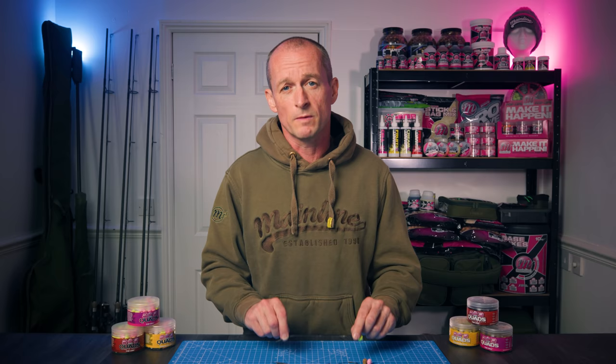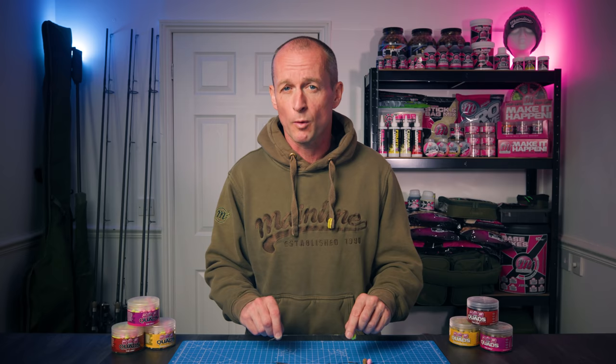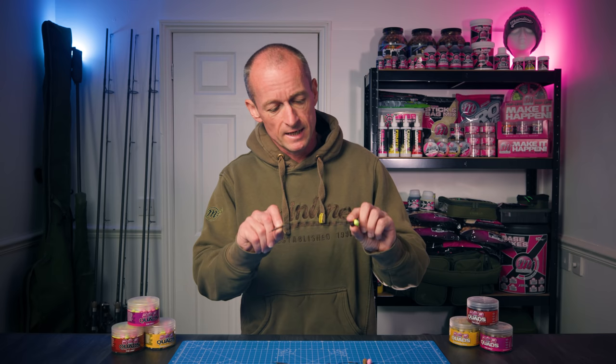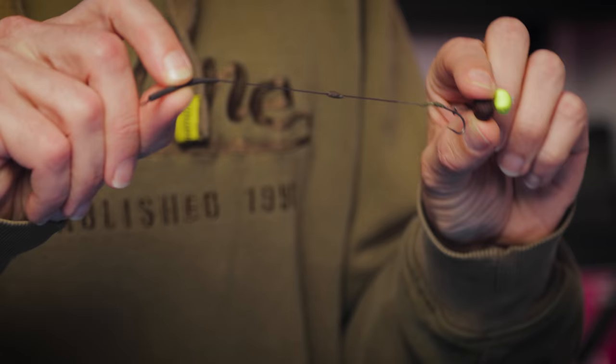Rig-wise, I think the most obvious way to use these hook baits is actually to combine the two: a bottom bait with a pop-up, a nice bright pop-up quad sat above it, to give you a snowman rig just like this.